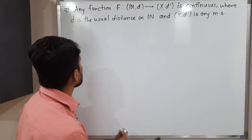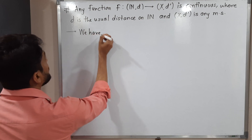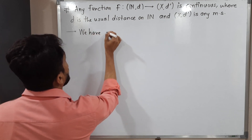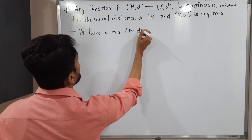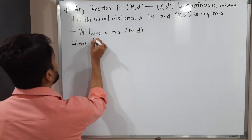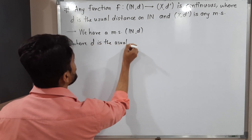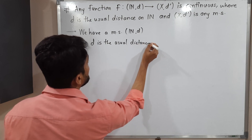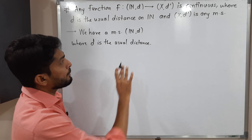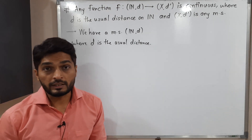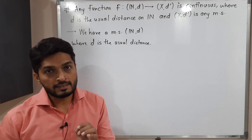Let us start with the given information. We have a metric space (N, d) where d is the usual distance. The definition of usual distance is d(x, y) = |x − y|. Before proving this result, we are going to prove one very important thing: every subset of (N, d) is an open set.